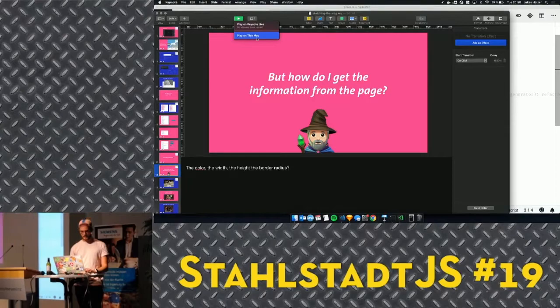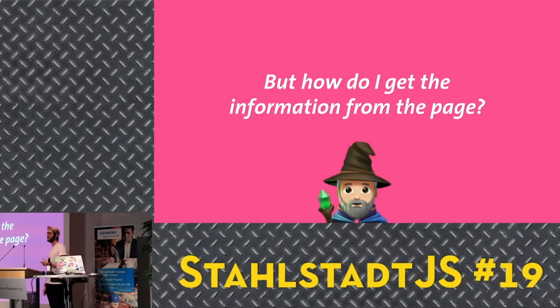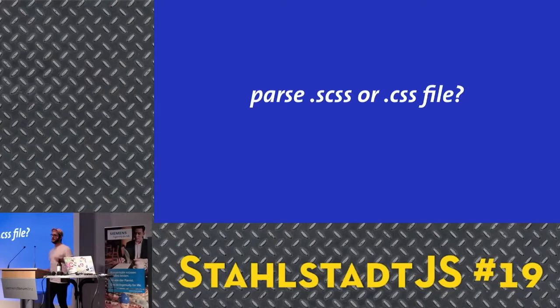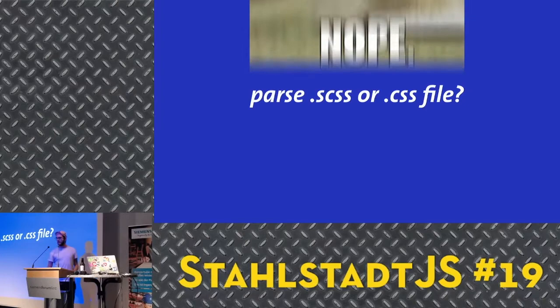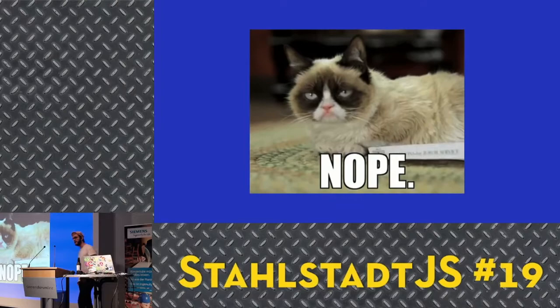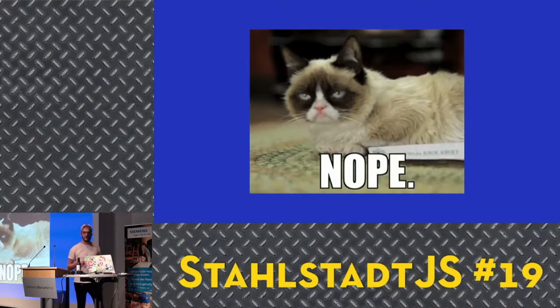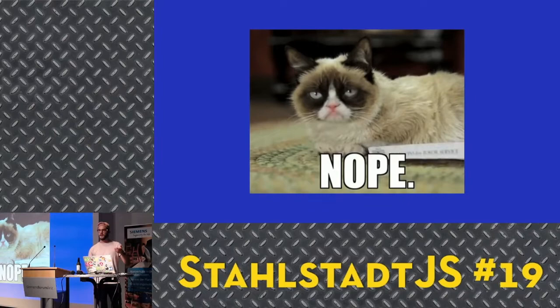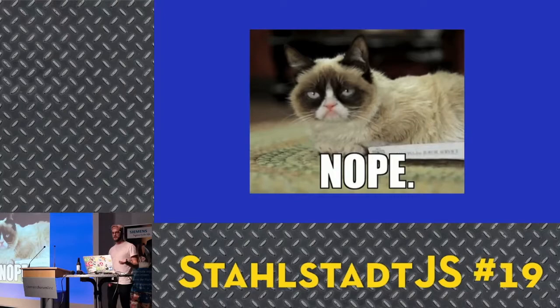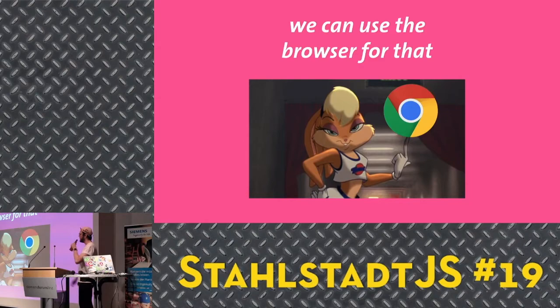The question is: how do we get the information from the page? We can parse an SCSS or CSS file to get the style information, the width and the height. Nope — I've been there and it wasn't a good idea. In CSS there is this cascade, and positioning elements with position: fixed or absolute is not reflected in the CSS file. There's a tool doing the magic, and you know this tool — it's Google Chrome. So why not let the browser handle this stuff for you?